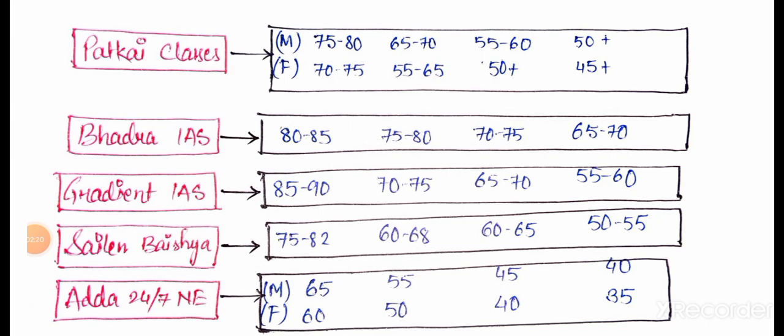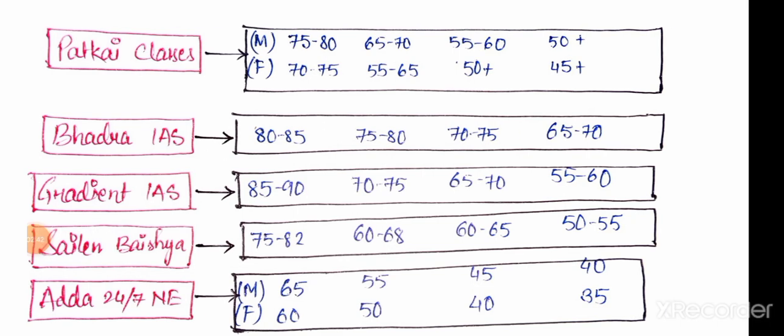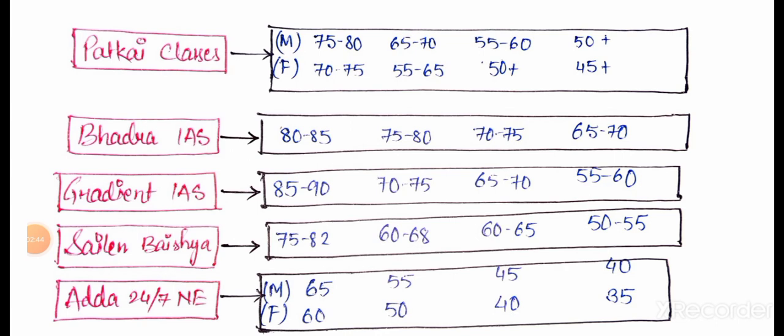Considering all those factors, hardly, maximum 9000 to 10,000 people will get selected for mains. So considering all of that, the cutoff will come down a bit from last time which was 122 for general male. But it won't come down as much as predicted here, like 65-60. I don't think so at all.